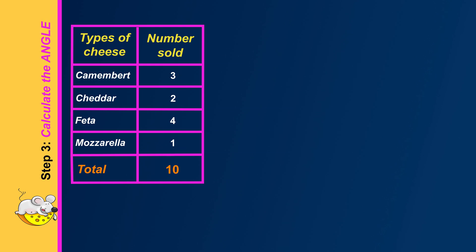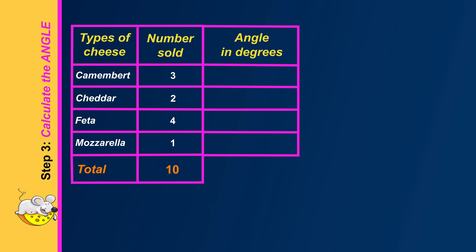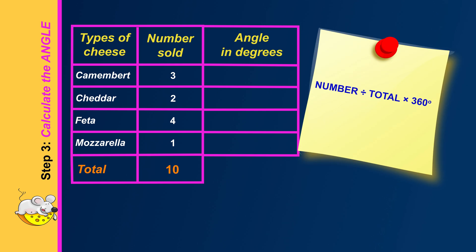In step three we calculate the angle that represents the number of each different type of cheese. The rule is the number divided by the total, multiplied by 360 degrees in a circle. For camembert, that's three out of a total of ten — three tenths — multiplied by 360, which equals 108 degrees.